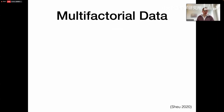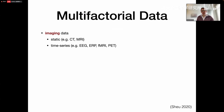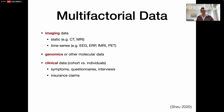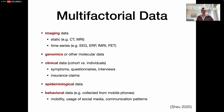Real-world data on these various factors can take very different forms. You could have imaging data — static from CT or structural MRI scans — or time series data such as EEG, ERP, fMRI, or PET scans. In addition, you could have genomics or other molecular data, clinical data based on cohort or individual data, symptoms, questionnaires, interviews, or even insurance claims. You could also have epidemiological or behavioral data collected from mobile phones, such as mobility, usage of social media, or communication patterns.